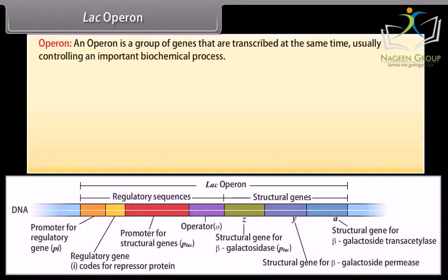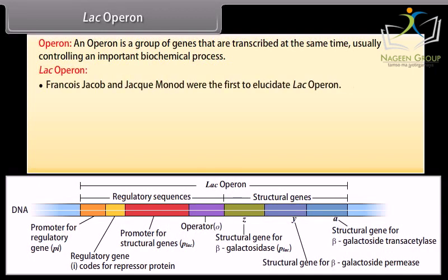An operon is a group of genes that are transcribed at the same time, usually controlling an important biochemical process. Francois Jacob and Jacques Monod were the first to elucidate the lac operon. It is the operon which controls lactose metabolism.